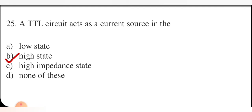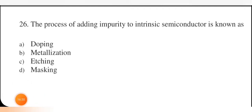The process of adding impurity to an intrinsic semiconductor is known as doping. Doping is the right option. Metallization is for metalizing; etching and masking are used when drawing PCBs to mask certain portions. So right answer is A — doping.